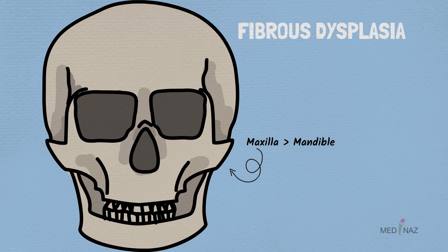In some cases, ossifying fibroma can be confused with fibrous dysplasia. But remember, ossifying fibroma is more common in the mandible and fibrous dysplasia is more common in the maxilla. FD most commonly involves the posterior region and it is commonly unilateral and very rarely bilateral.